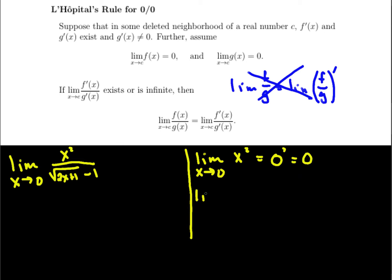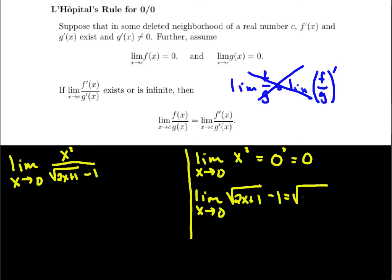On the bottom, we've got the limit as x approaches zero of the square root of 2x plus 1 minus 1. Again, this is a continuous function, so I can plug it in. This is equal to the square root of 2 times 0 plus 1 minus 1, which is 1 minus 1, or 0. So we've met the requirements — the hypotheses of L'Hôpital's rule. The top's going to 0, the bottom's going to 0, and so we can investigate the derivatives.